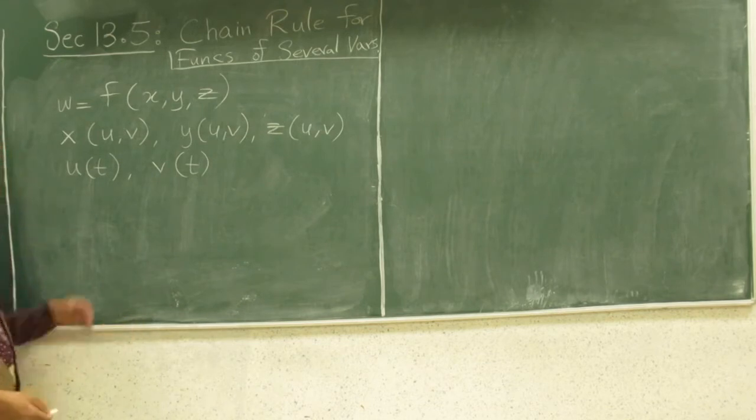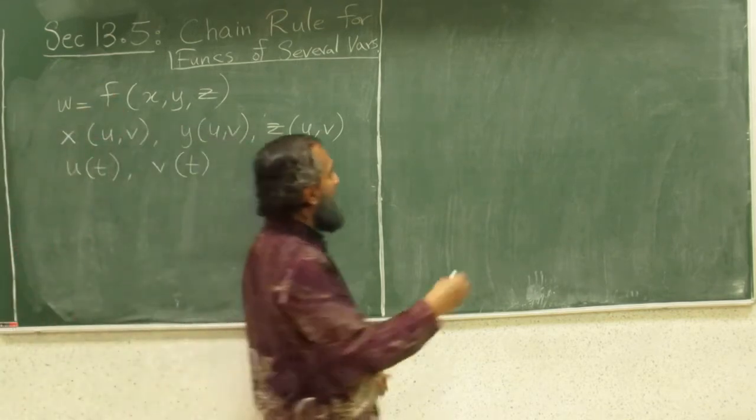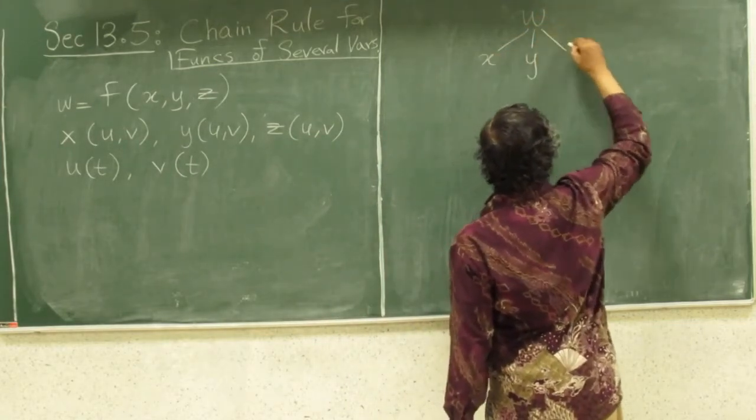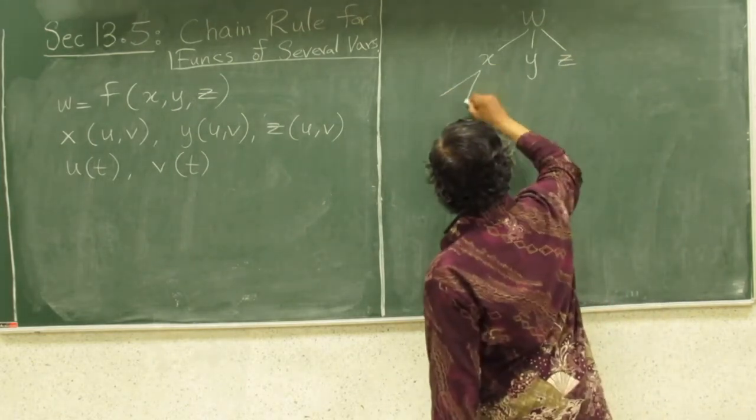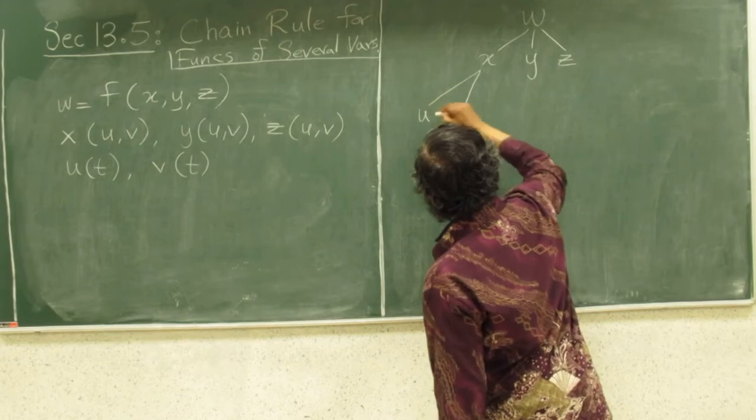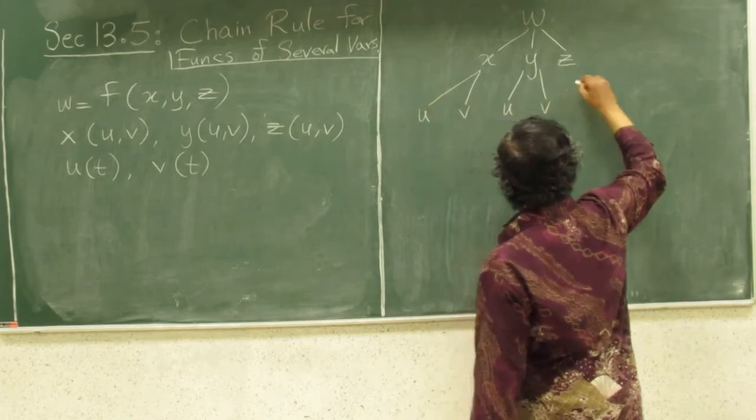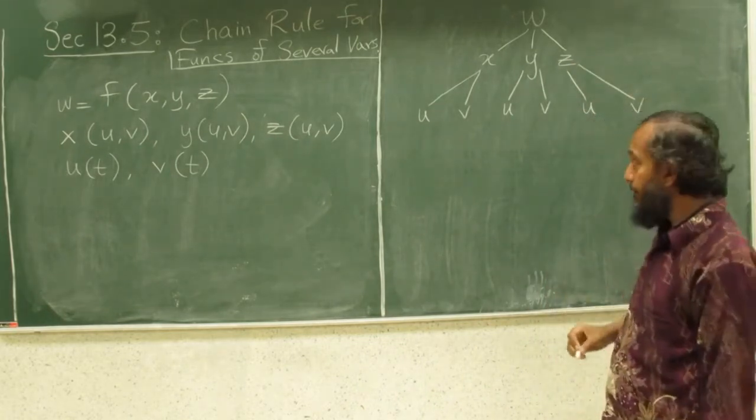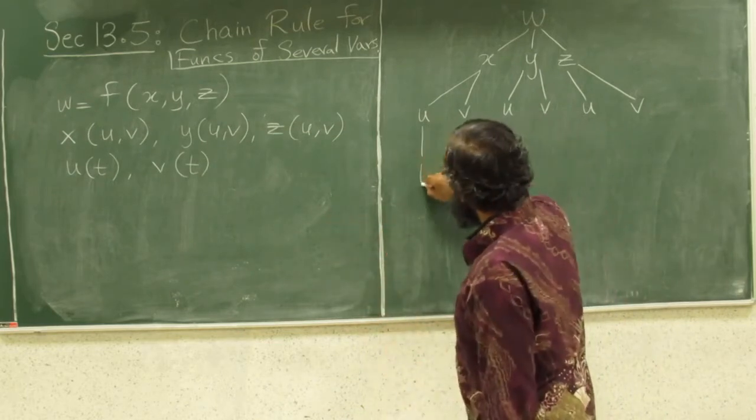Let's draw the tree diagram to see what kind of questions can be asked. So, w is a function of x, y and z and x is a function of u and v, y is a function of u and v and z is a function of u and v. And each of these u and v is a function of t.